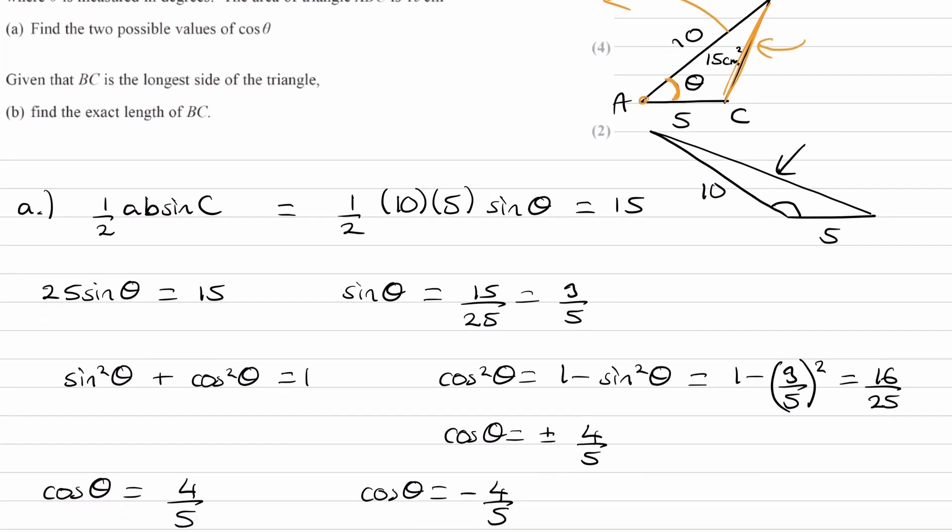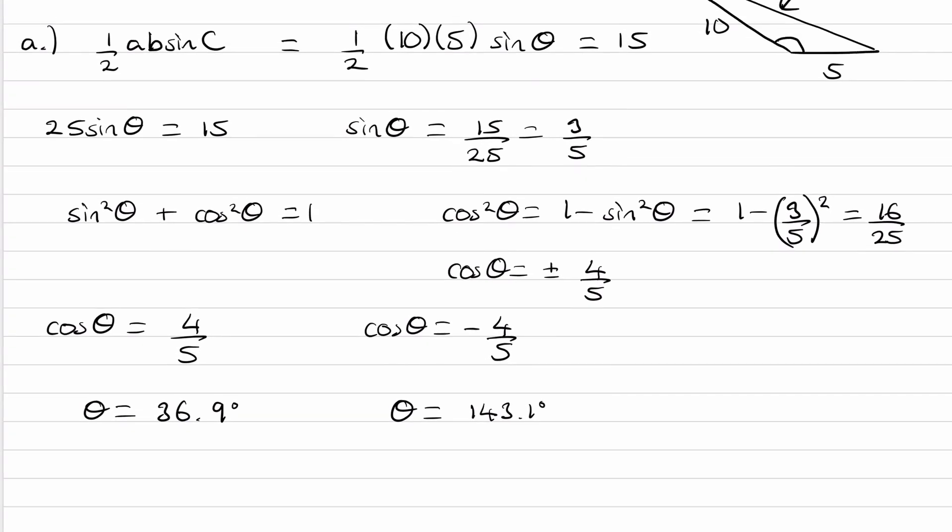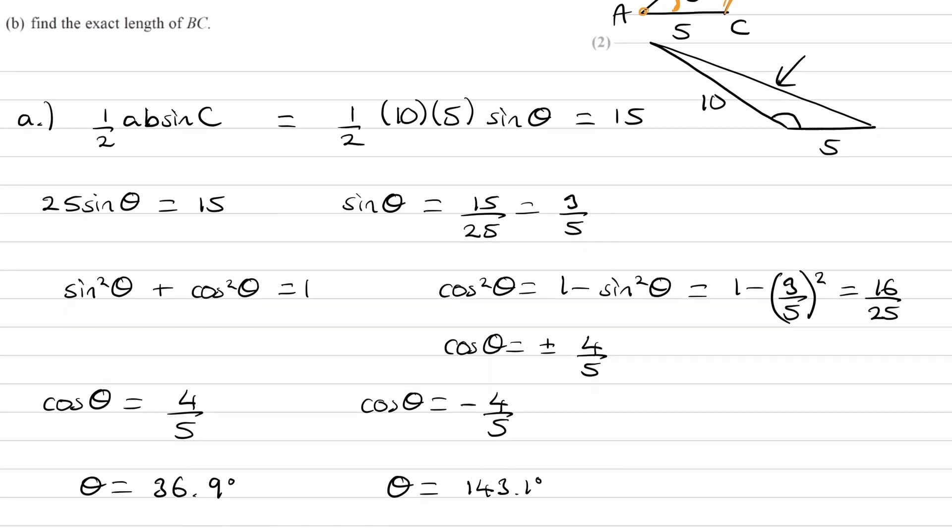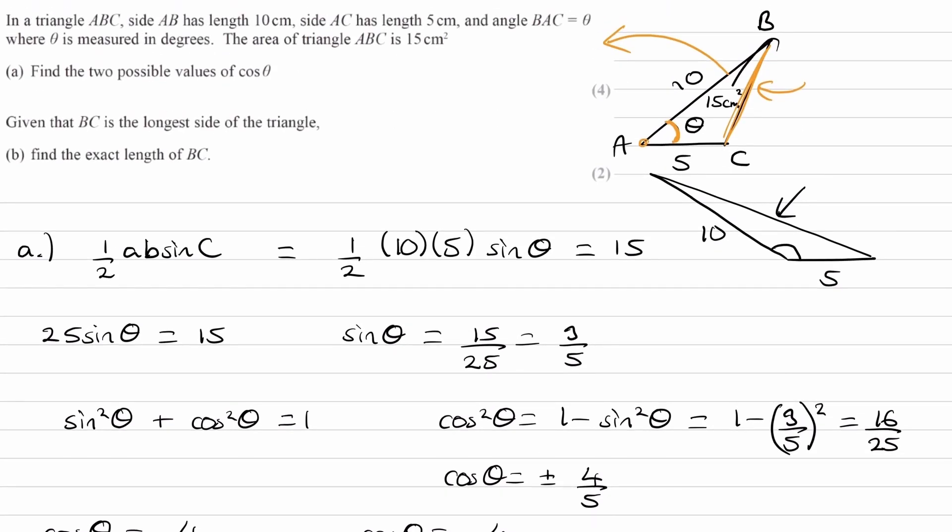We are therefore using theta equals this, or we are using cos theta equals minus 4 over 5. We want to find out an exact length of BC, so it'll be better to use cos theta is minus 4 over 5 instead of this rounded decimal.